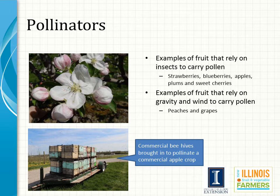With strawberries, blueberries, apples, plums, and sweet cherries, insects carry the pollen from flower to flower — in other words, insects are the pollinator for these crops. Some fruits, such as grapes and peaches, rely on gravity or wind currents to carry pollen from their anthers to the pistil. Heavy rains during bloom can interfere with pollen distribution or insect activity. Seed formation will be poor if pollination is inadequate, and seed formation is essential for the growth and development of most fruits.